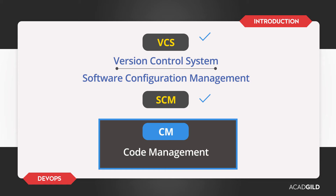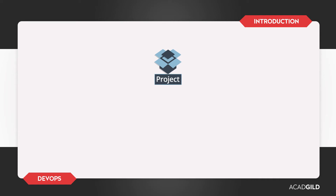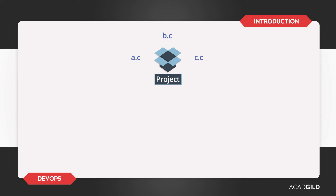Let's understand what a Version Control System is. Let's take a scenario from the project we are working on — the project contents are nothing but development files. Let's say the project consists of files called AC, BC, and CC. Let us see how the work process flows if you or your team are not using a Version Control System.